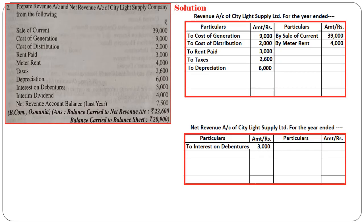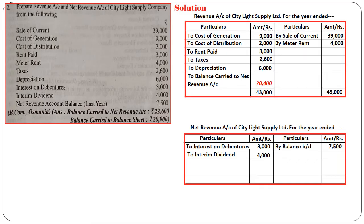Interest on debentures, as discussed earlier, is debited to net revenue account: to interest on debentures — Rs. 3,000. Interim dividend is also debited to net revenue account — Rs. 4,000. The net revenue account balance (last year's balance) is credited in net revenue account: by balance brought down — Rs. 7,500. With all values entered, we close the revenue account. The total credit side is Rs. 43,000, written on both sides, giving a balancing figure of Rs. 20,400 as balance carried to net revenue account.